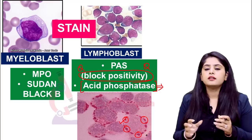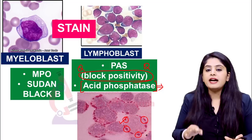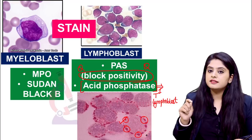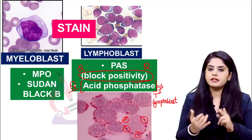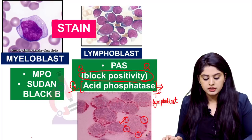The other stain is acid phosphatase. The lymphoid series includes B cells and T cells — a lymphoblast can be B cell or T cell. Acid phosphatase is the particular stain which will particularly stain the T lymphoblast. That is again another question asked in the exam. So PAS will give block positivity — question number one. Acid phosphatase will also stain the lymphoblast, but particularly the T lymphoblast — very important information for the exam.